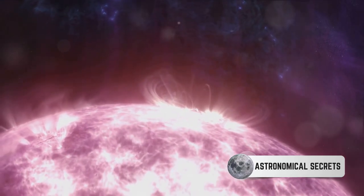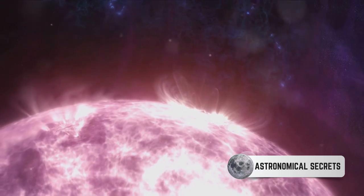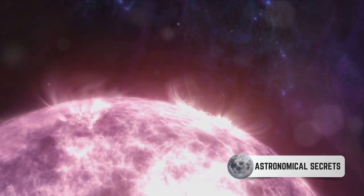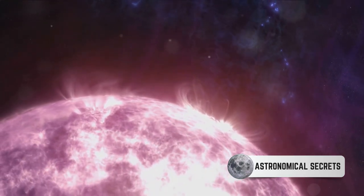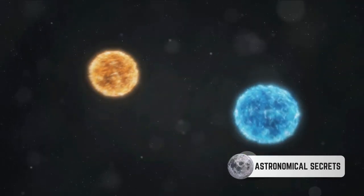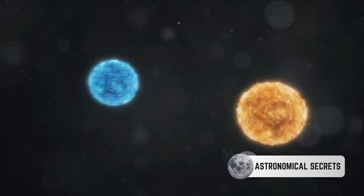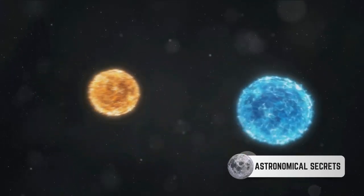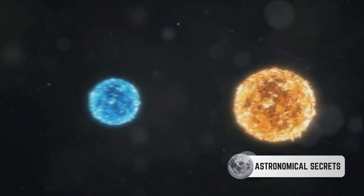As the core contracts and heats up, the outer layers of the star start to expand and cool down, turning the star into what we call a red giant. Our once-modest low-mass star now becomes a behemoth, often expanding to a size that could engulf the inner planets if it were placed at the center of our solar system.